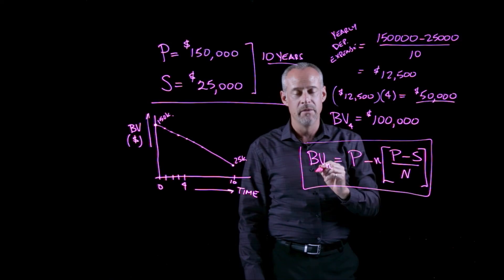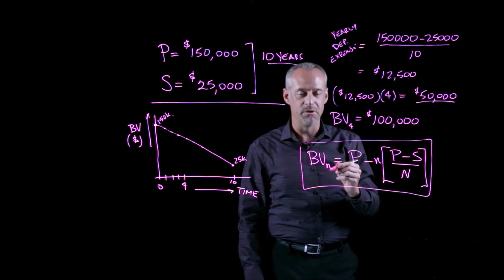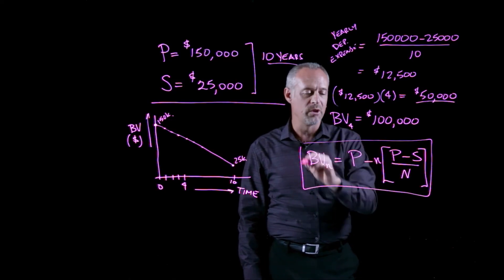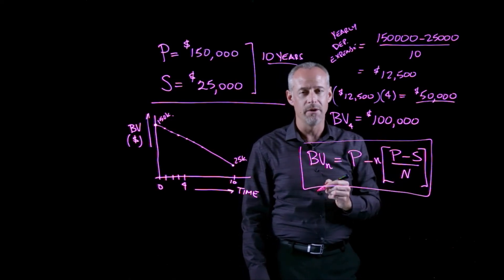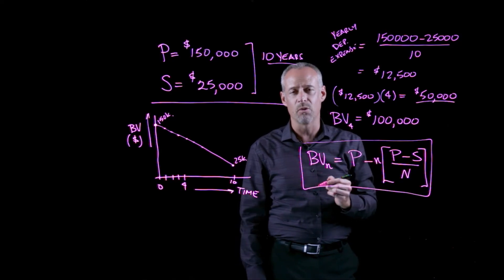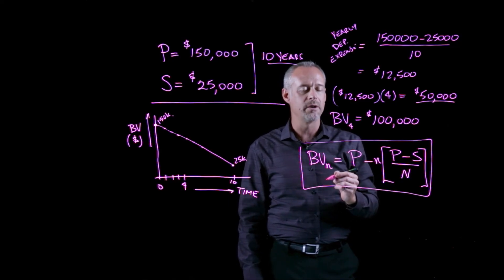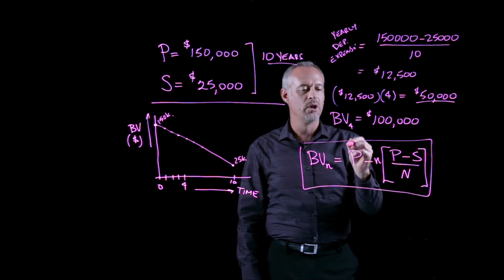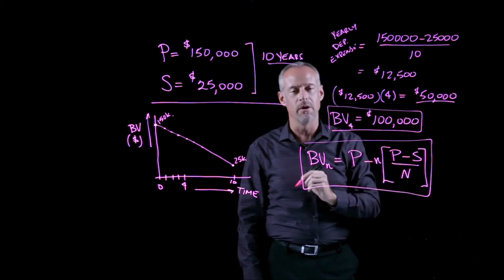Most of the time, with straight-line depreciation, you should be able to just think about it and come up with a solution. But if you want to, formulas such as this can be found on the inside front cover of your textbook. But in other words, to just answer the question that was asked, the book value at the end of year four for this asset is one hundred thousand dollars.